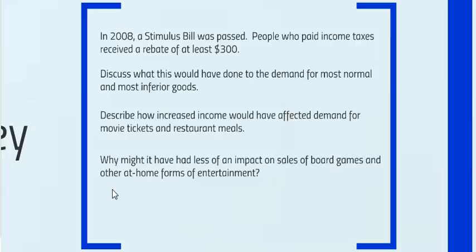If a family with limited income received an extra three hundred dollars, they might go out to eat at a nice restaurant or see a movie. Board games and other at-home entertainment would be considered inferior goods — things we do when we don't have extra income, like staying home Friday night, cooking a frozen pizza, watching TV, or renting from Redbox.